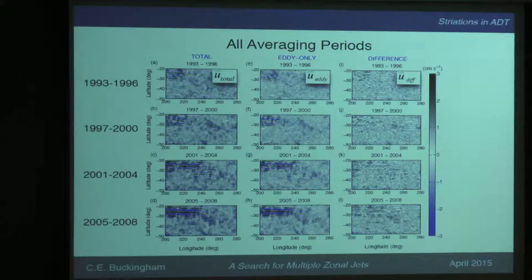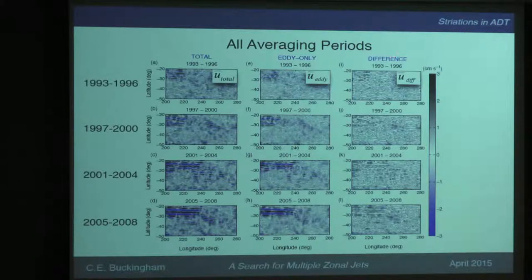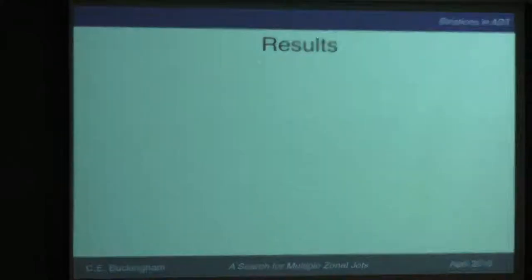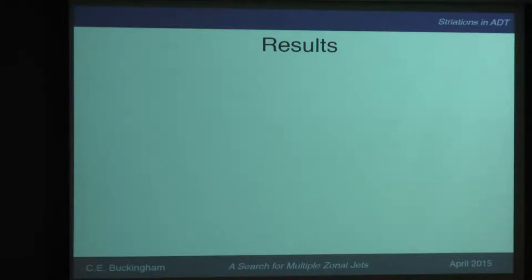These are the four averaging periods. The total observed is on the left-hand column, the central column is the eddy-only, and the right column is the difference. You can see that whatever's left is quite small, but it nonetheless may be important. You can ask me towards the end of the talk whether this decomposition between eddies and jets is really a valid one.